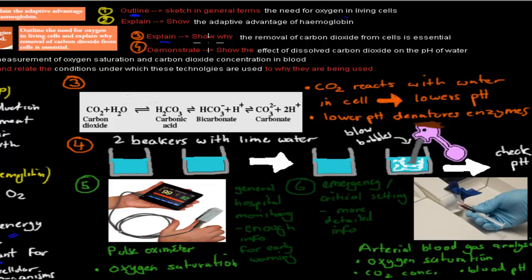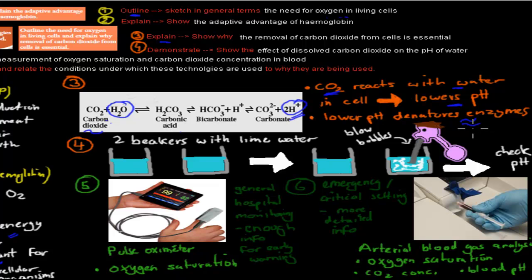The next dot point was 'explain why' the removal of carbon dioxide from cells is essential. Carbon dioxide reacts with water in cells to form carbonic acid, which dissociates to form hydrogen ions — that's what lowers the pH. When pH is lowered, it will denature the enzymes in cells, meaning those cells don't work as well because enzymes aren't there to speed up chemical reactions. That's why we need to remove carbon dioxide to ensure enzymes work properly.